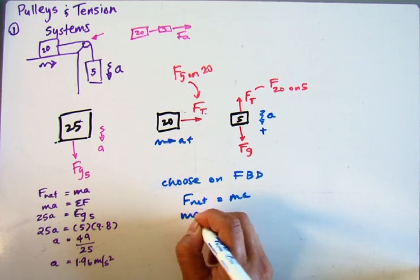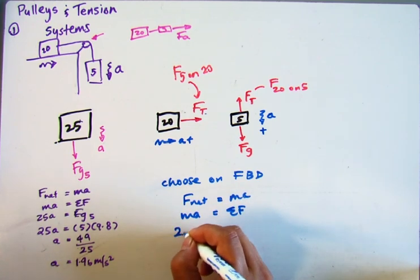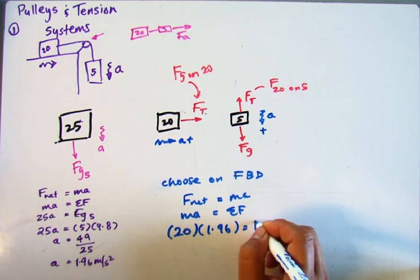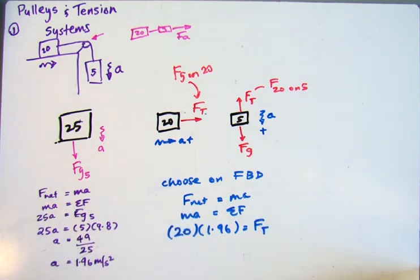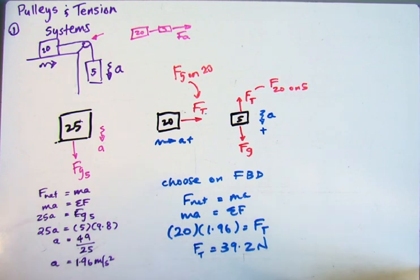Ma equals the sum of the forces. Well, in this case, Ma is 20 times 1.96. And the sum of the forces is just tension, which is what we happen to be looking for. So 20 times 1.96, that's 39.2. So we find that FT equals 39.2 Newtons. And that's our answer.